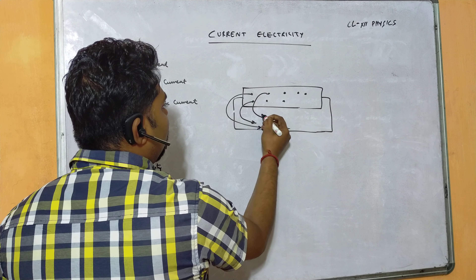Electric current can be of three types: steady current, varying current, and alternating current. Steady or direct current has constant magnitude and direction. If only the magnitude changes with time, it is called varying current. An example of varying current is the current flowing through a capacitor while it is being charged — as the capacitor charges, the current decreases, showing a varying nature.